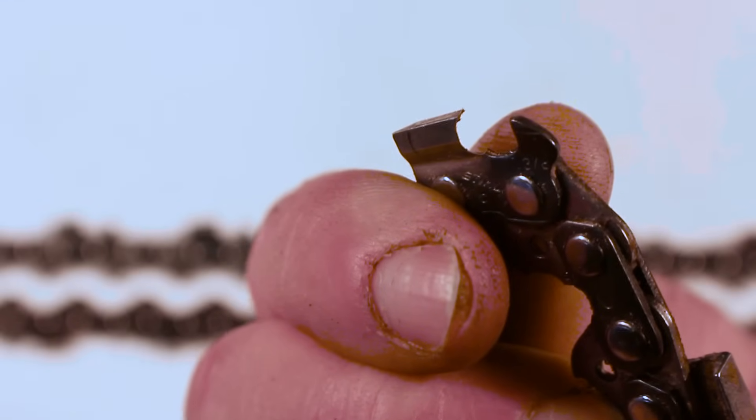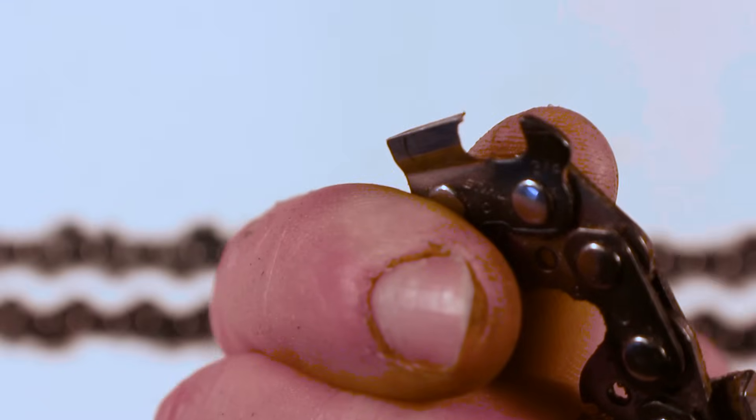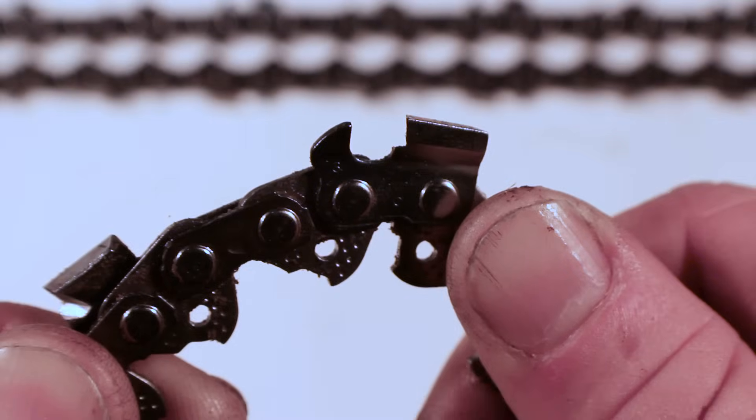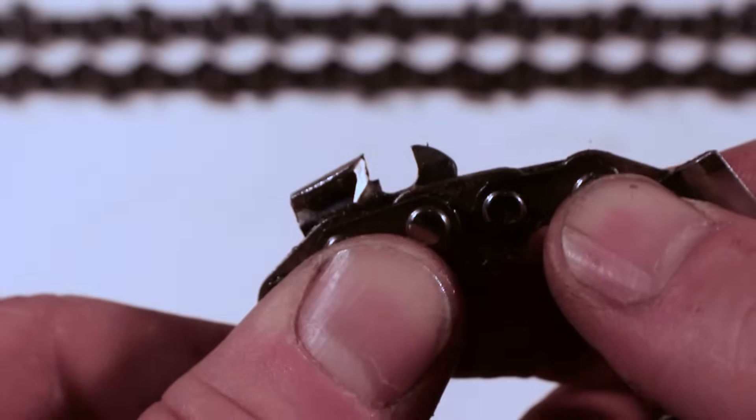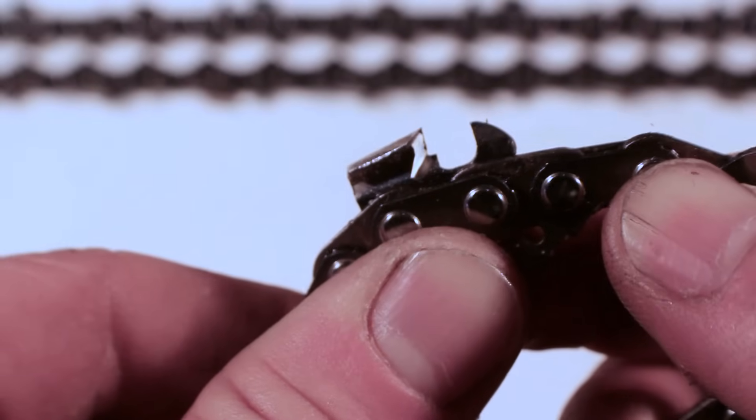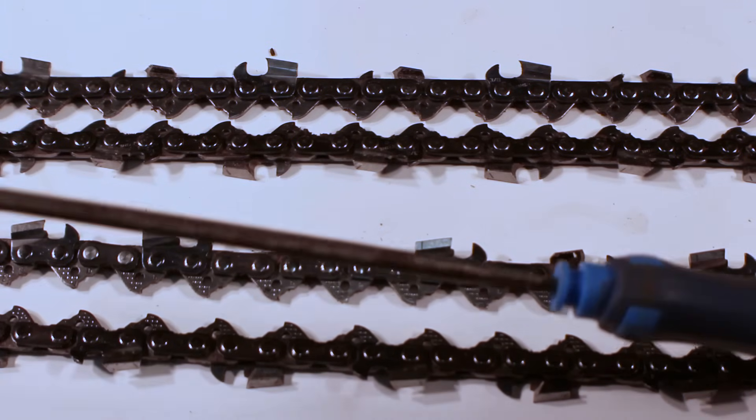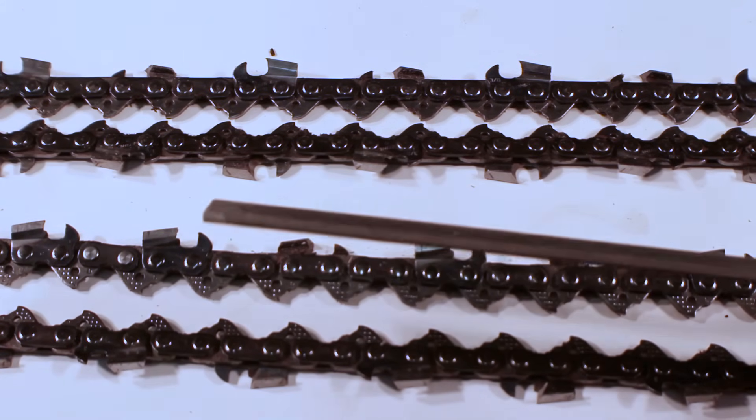In this close-up of the round ground you can clearly see the sharpening file used is a circle as it creates a round profile. In the close-up of the square ground you can clearly see it has straight lines. Basic tools for sharpening these chains - the round ground uses a round file and the square ground uses a special beveled file.